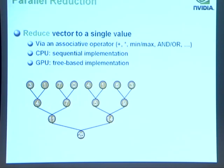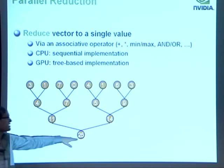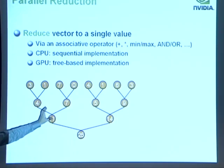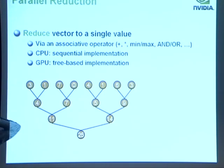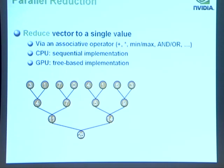If we look at parallel reduction: we have a number of threads each with a data value, shown in the leaves of the tree, and we want to reduce those to a single value. Typically we use a tree-based algorithm where each thread loads two values for a binary tree reduction. This is in contrast to a CPU where you might do a sequential summation, whereas on a GPU you get the best use of processors by doing a tree-based implementation. It also turns out that for a lot of values in the same range, you get much better accuracy with tree-based reduction even on a CPU.